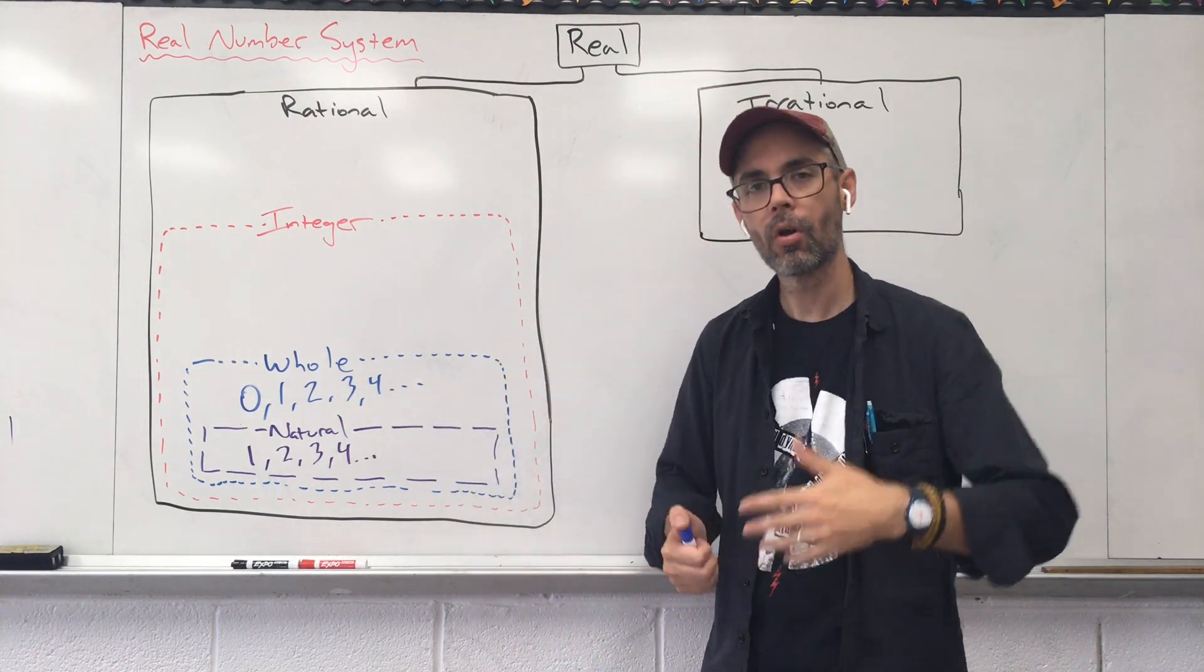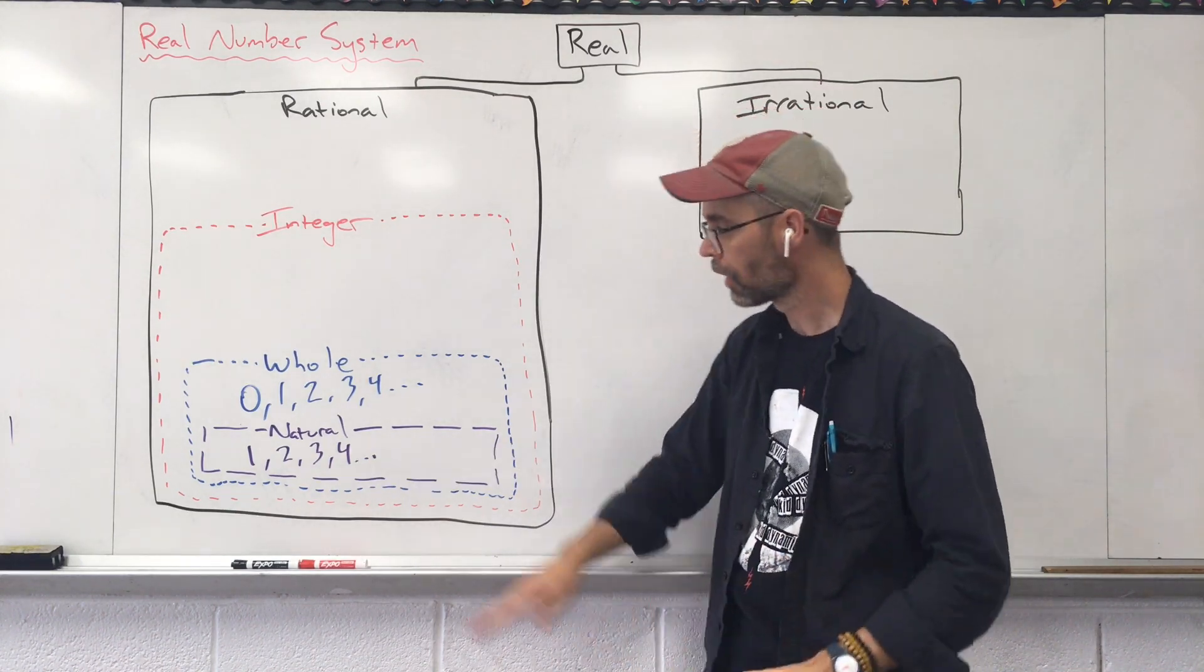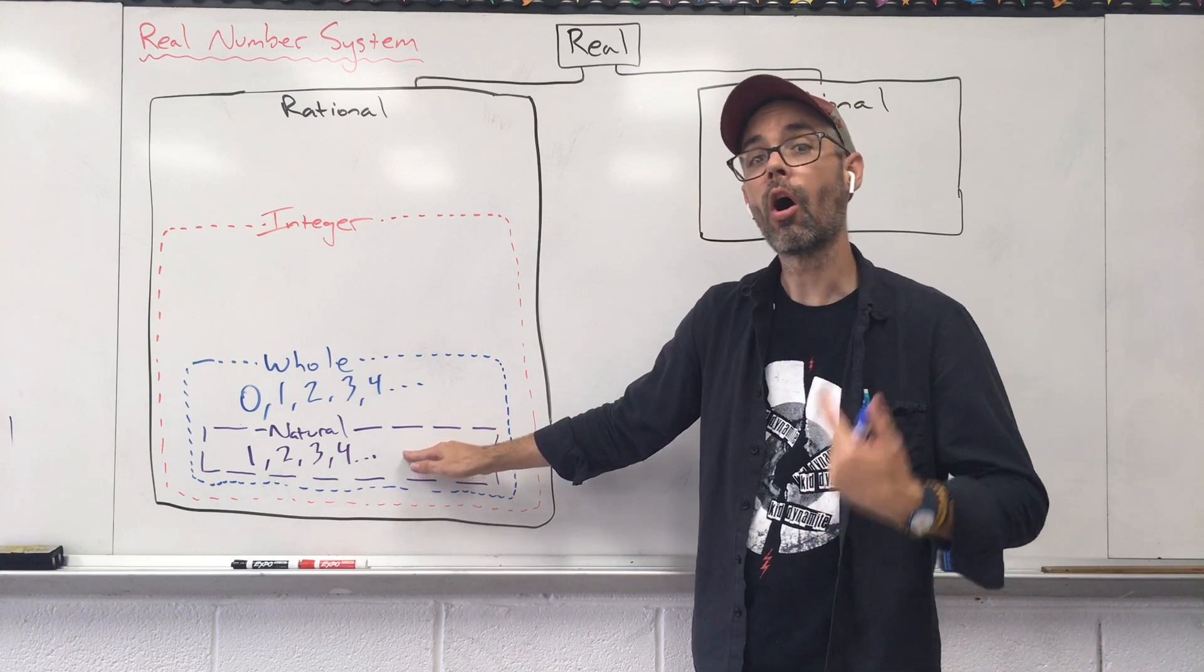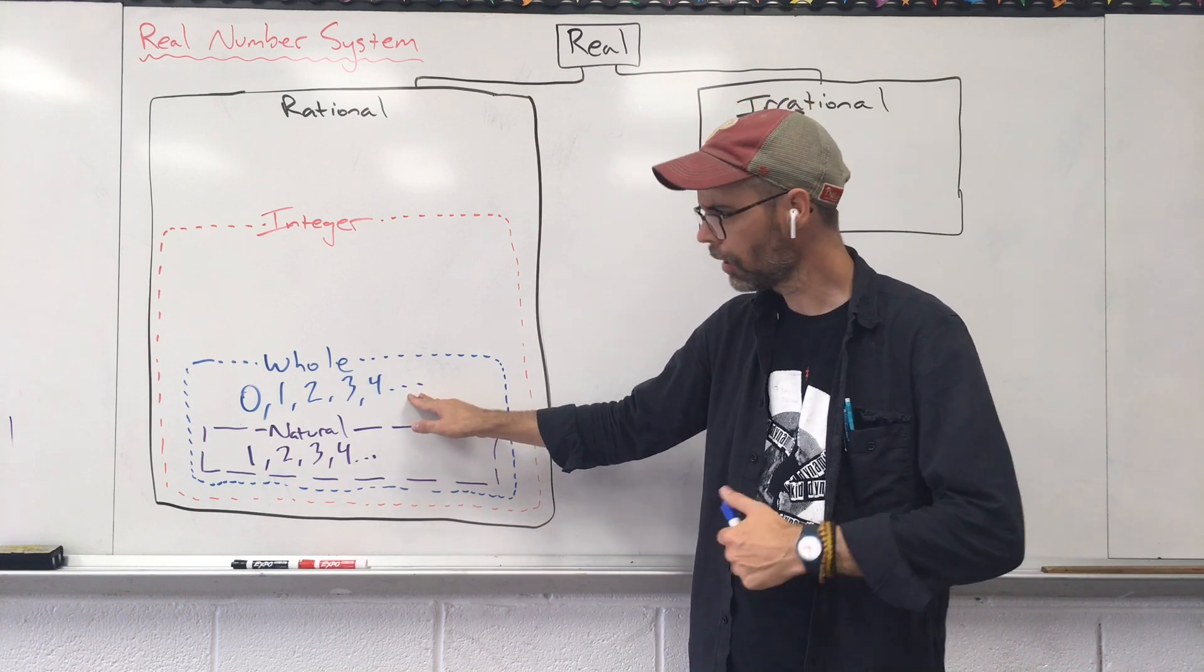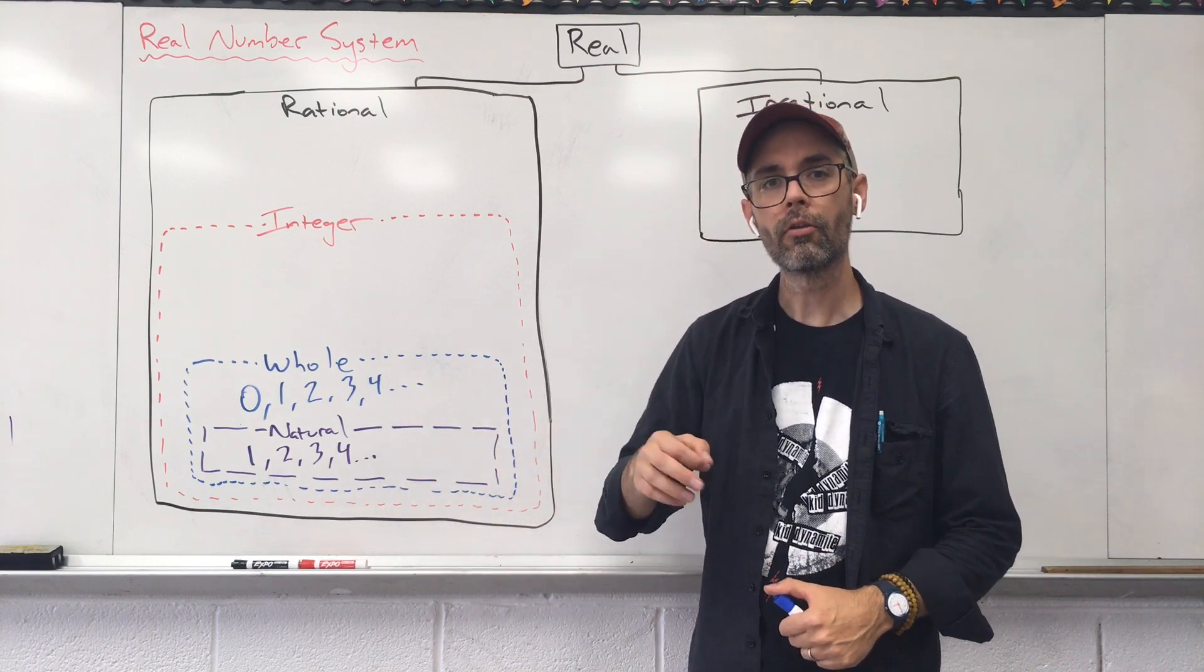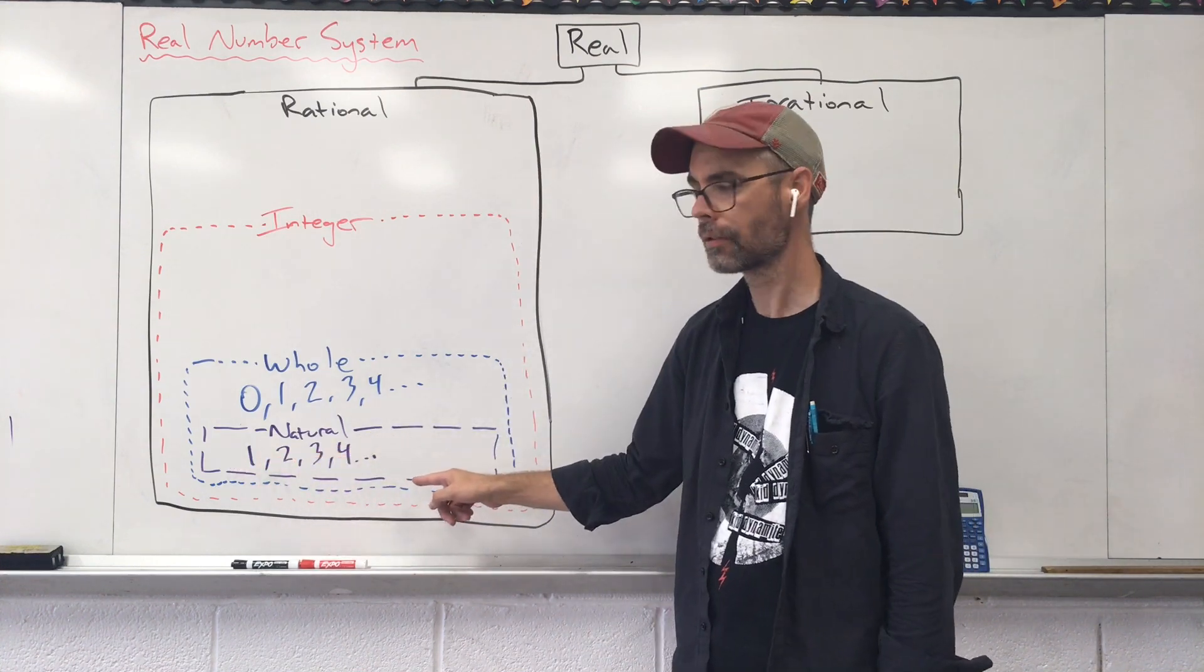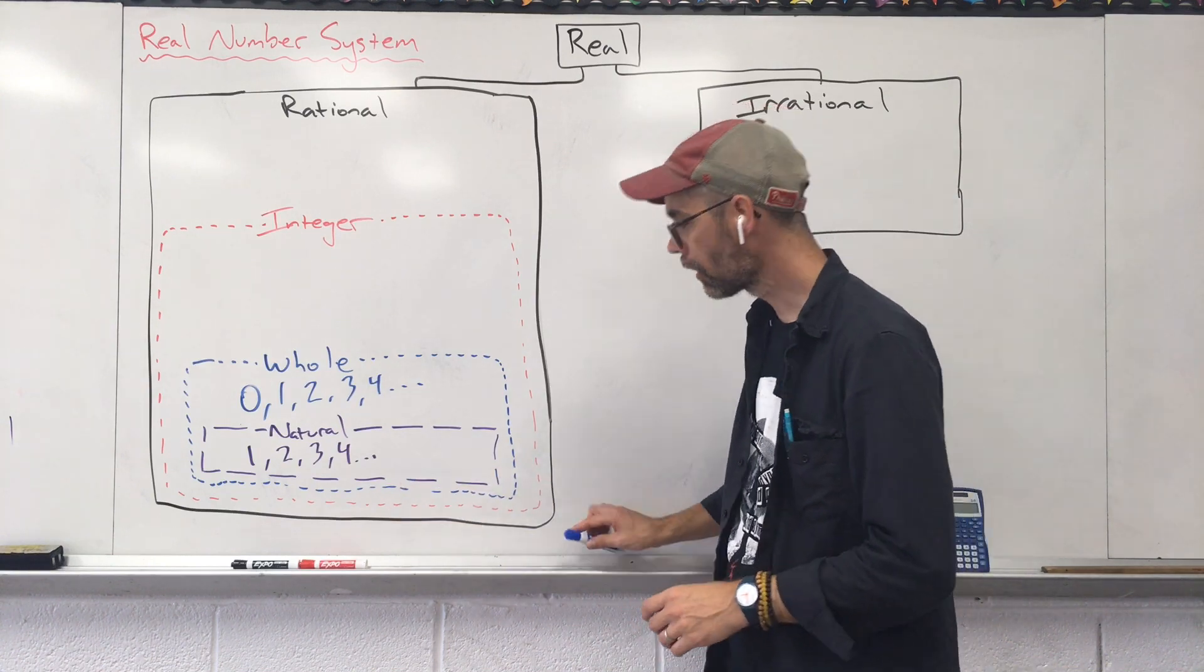So if I ask what type of number, what category does the number four belong in? You could easily say, oh, it's a natural number. You could also say four is also a whole number. What if I ask, can you categorize zero? Well, it's not in my natural list. It's only a whole number. Whole is the only thing we can say so far.